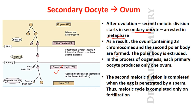At the end of the second meiotic division, the ovum containing 23 chromosomes as well as the second polar body is formed - the polar body is extruded in the process. In oogenesis, each primary oocyte produces only one ovum. In contrast, in spermatogenesis in males, one spermatogonium produces 512 spermatozoa. The second meiotic division is completed when the egg is penetrated by a sperm.